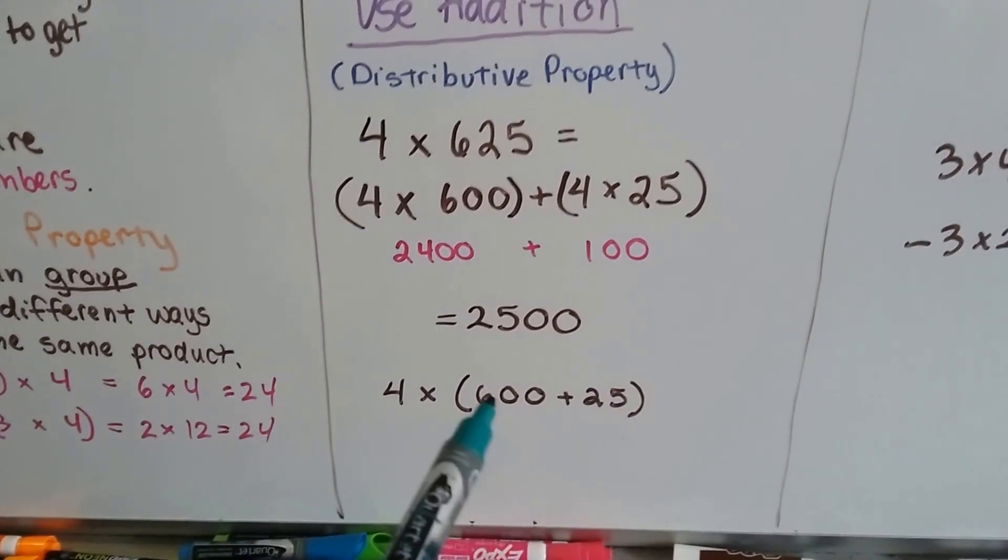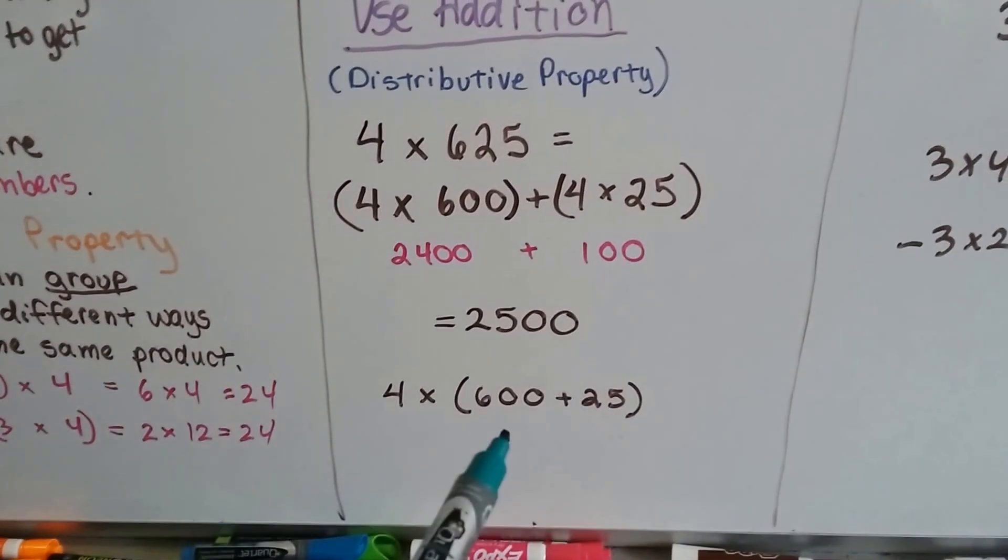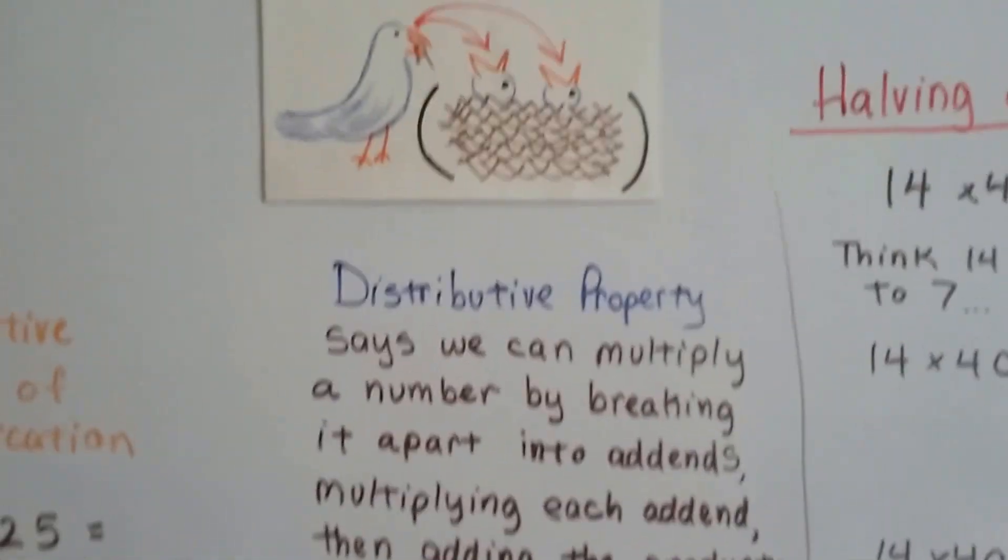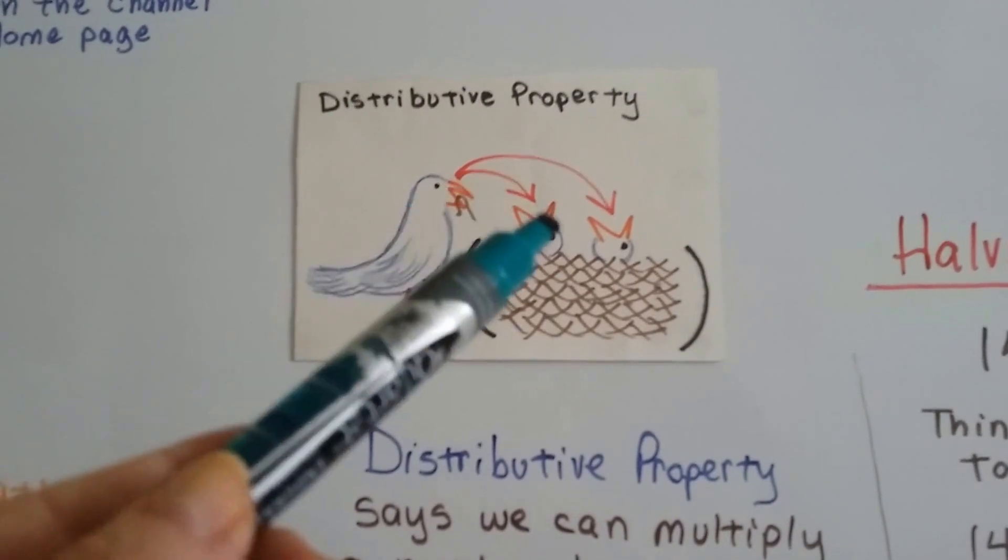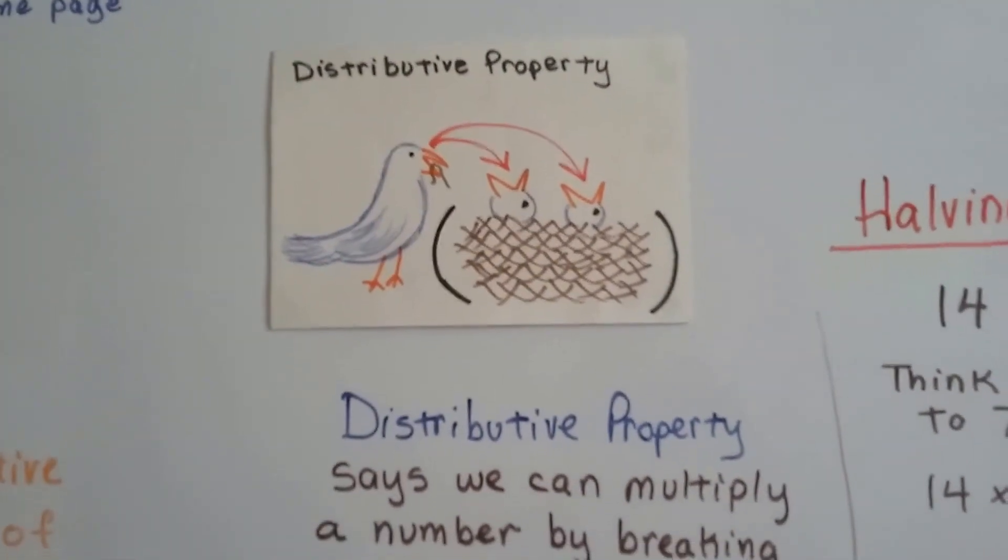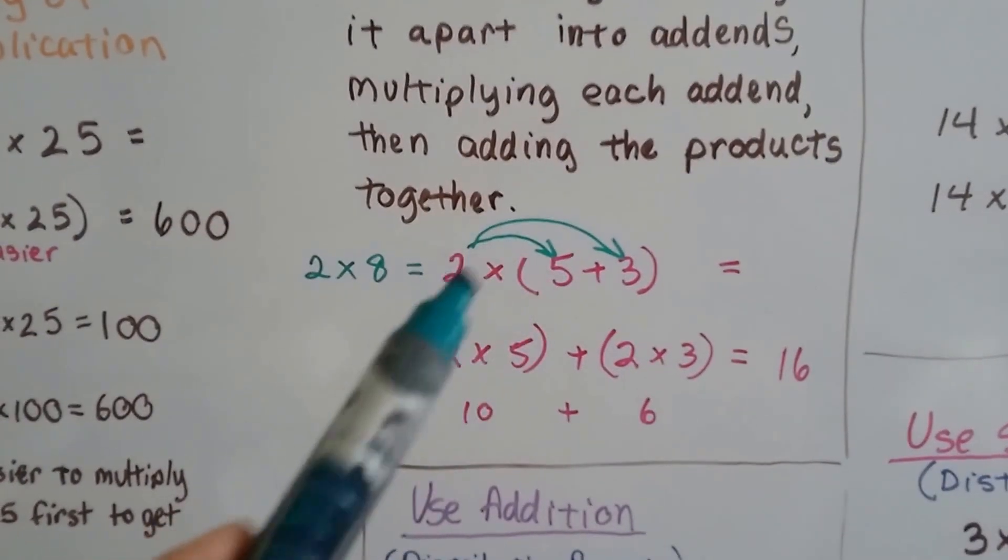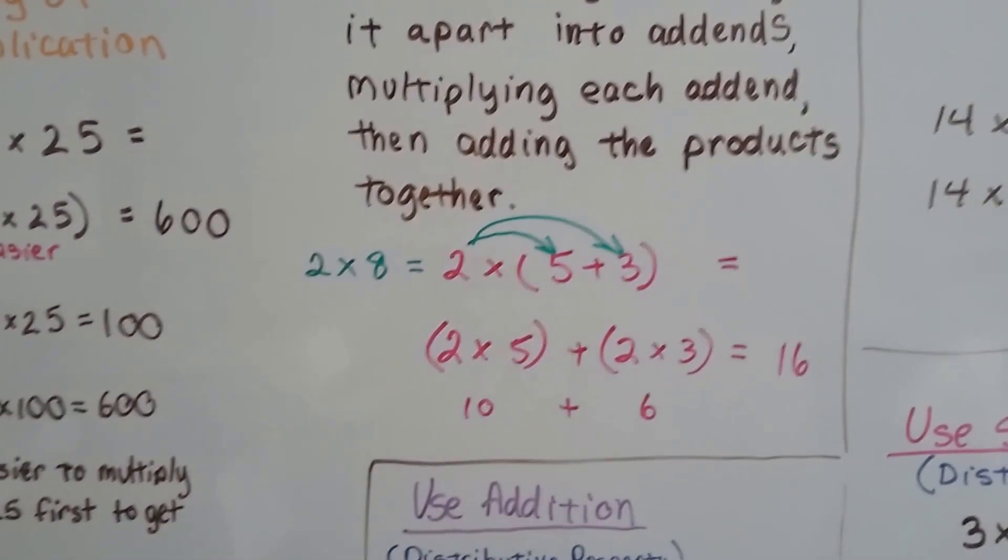So we broke it apart into 600 and 25 for our 625. We think of the distributive property like a mother bird feeding her babies in a parenthesis nest. Each one gets their turn. We don't skip anybody. We multiply by each one with that addition sign in between them.